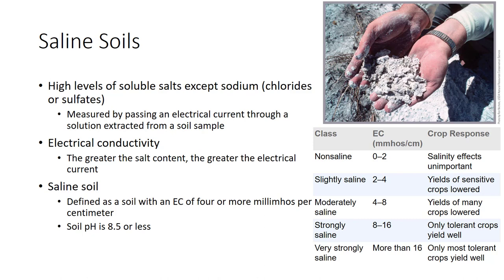Saline soils have high levels of soluble salts except sodium. Soil salinity can be easily measured by passing an electrical current through a solution extracted from a soil sample. The greater the salt content, the greater the electrical current. This value is called electrical conductivity, or EC, and is the means by which we measure salinity. For many common day-to-day uses, EC is measured as millimoles per centimeter. For scientific publication, the units siemens per meter are preferred, and one siemen per meter equals 10 millimoles per centimeter. A saline soil is defined as a soil with an EC of 4 or more millimoles per centimeter. However, salinity levels as low as 2 millimoles per centimeter can injure sensitive plants.